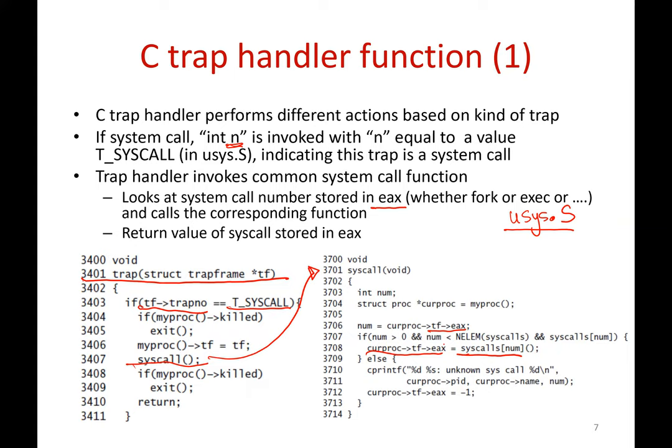In a previous lecture, we saw that whenever a user process makes a system call, the INT n instruction is invoked. That INT n instruction will run the C trap function, which calls the system call function, which looks at the value in EAX and invokes the corresponding call. All system calls are defined in an array of function pointers and the corresponding system call is invoked. This is the chain of events leading to execution of a system call — whether it is fork, exec, or anything else in the kernel.